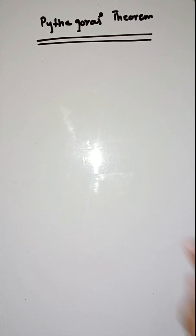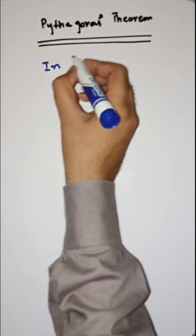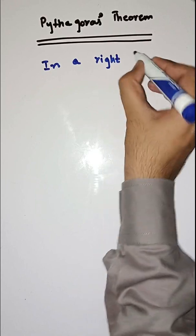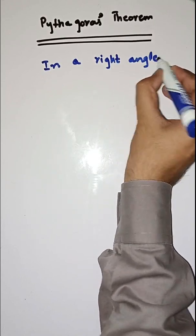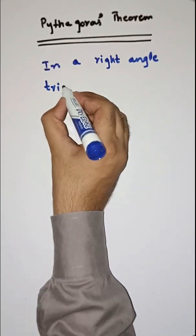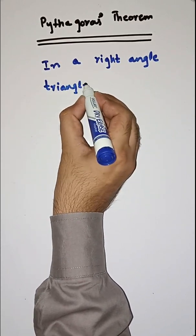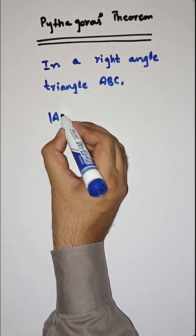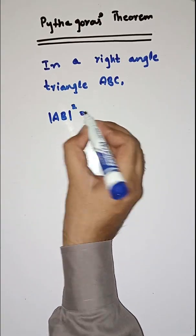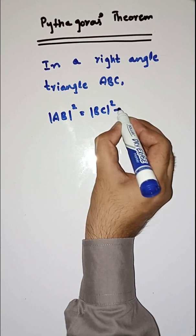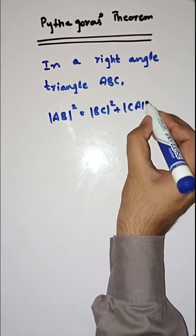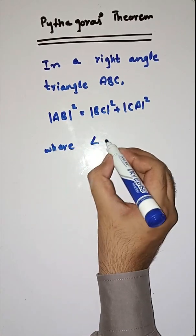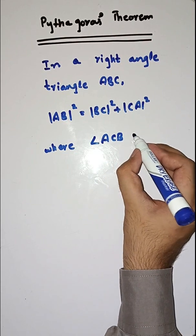What is Pythagoras theorem? In a right-angled triangle ABC, AB square is equal to BC square plus CA square, where angle ACB is equal to 90 degrees.